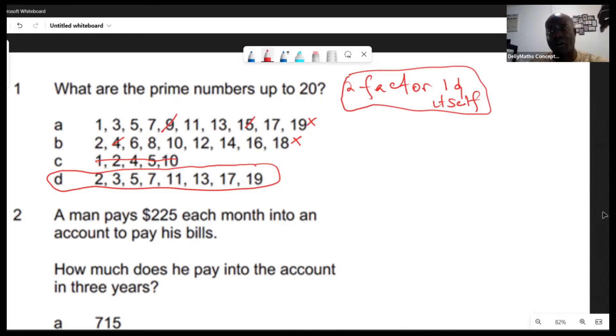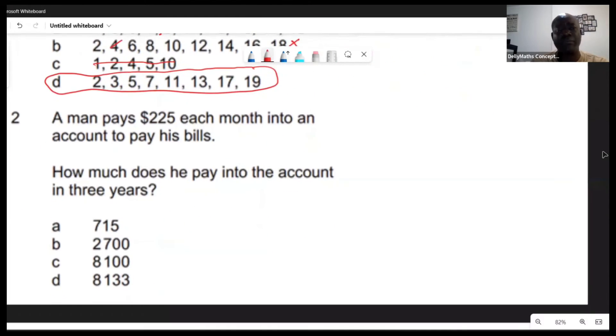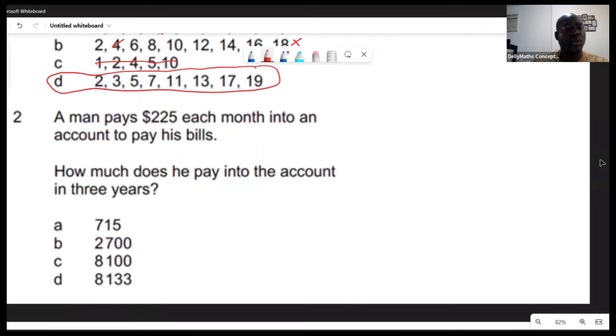Using that, you would have picked D. Let's look at question two. Question two says a man pays $225 each month into an account to pay his bills. Now this is important - it's each month. The question says: how much does he pay into the account in three years?